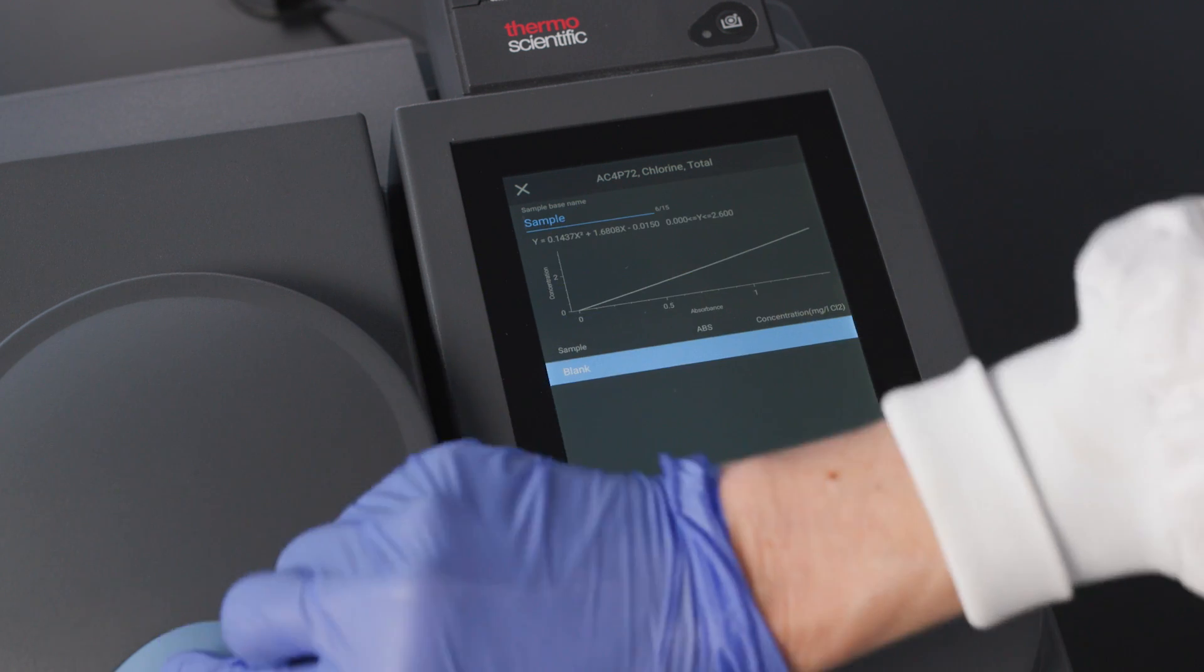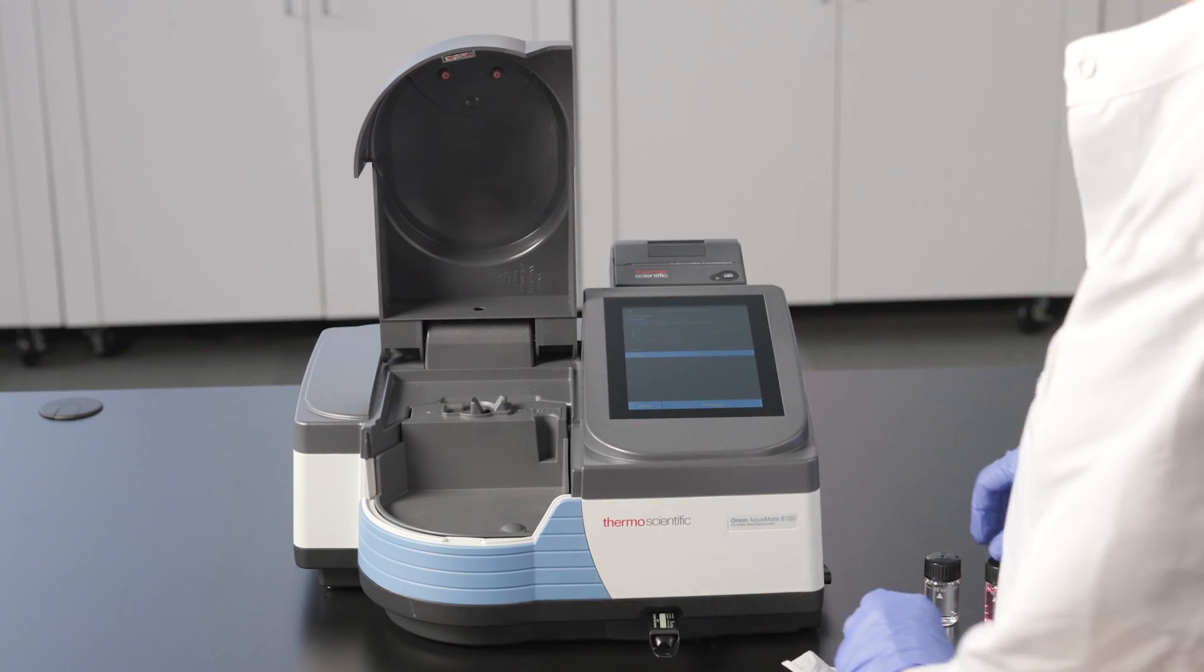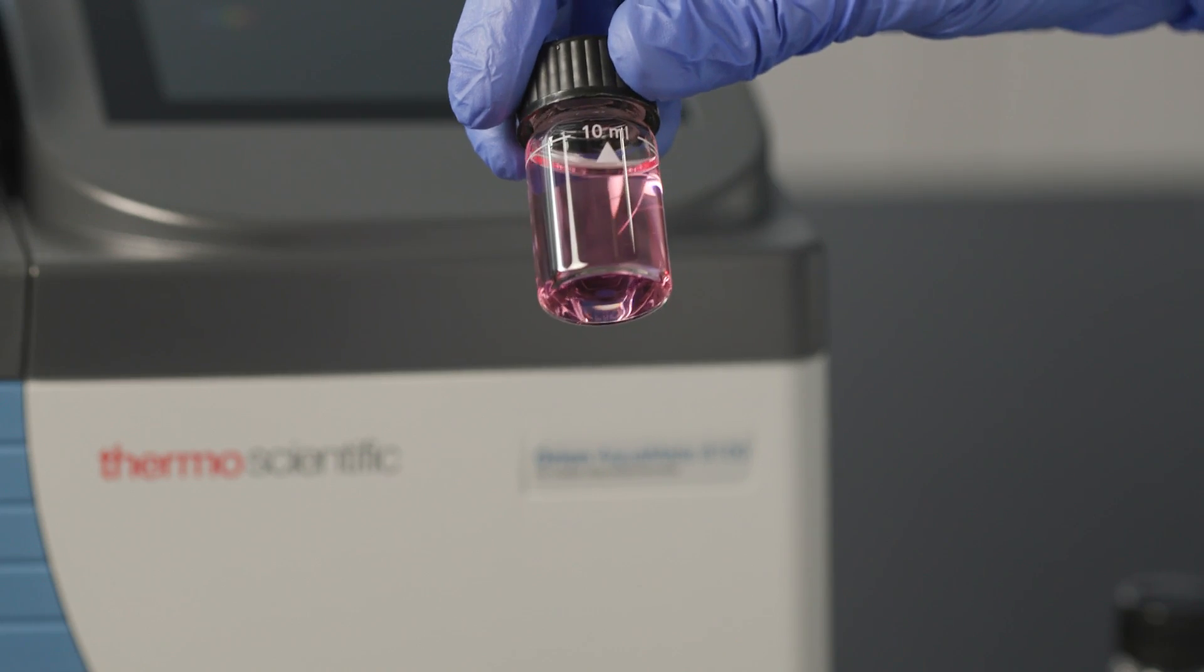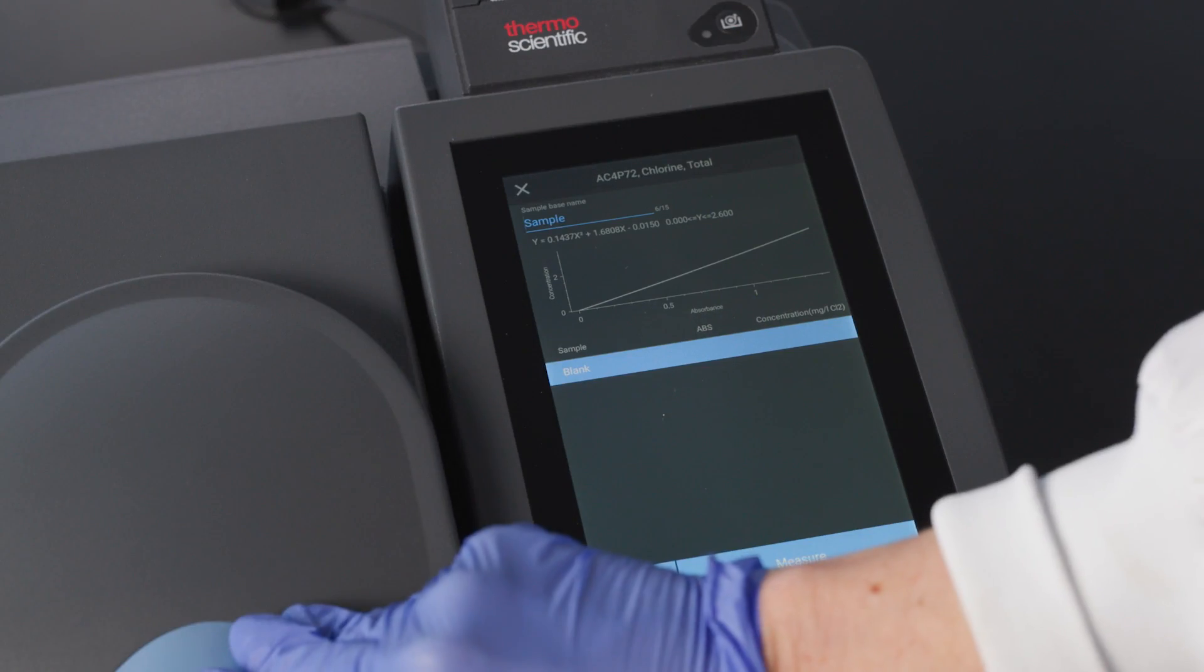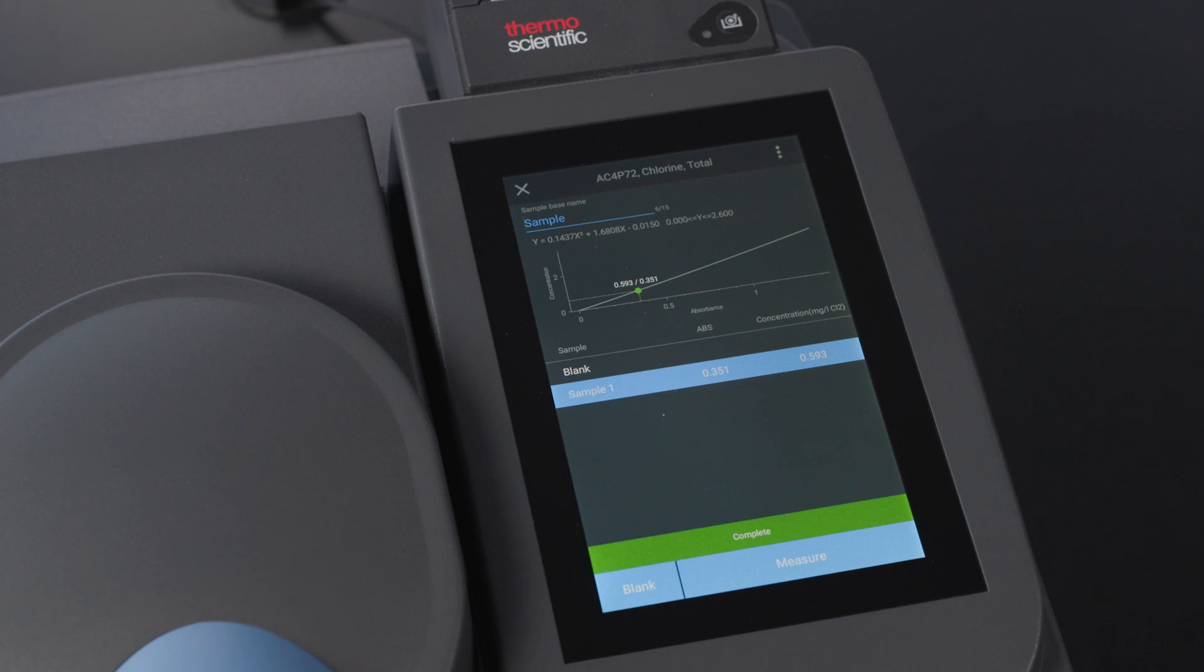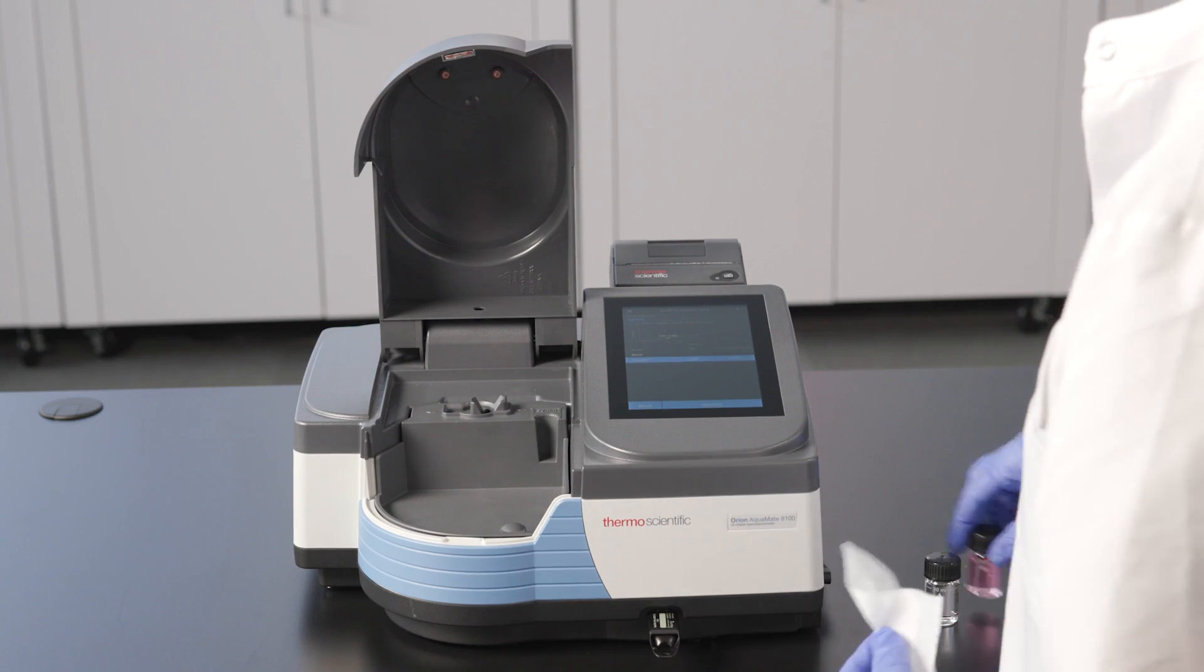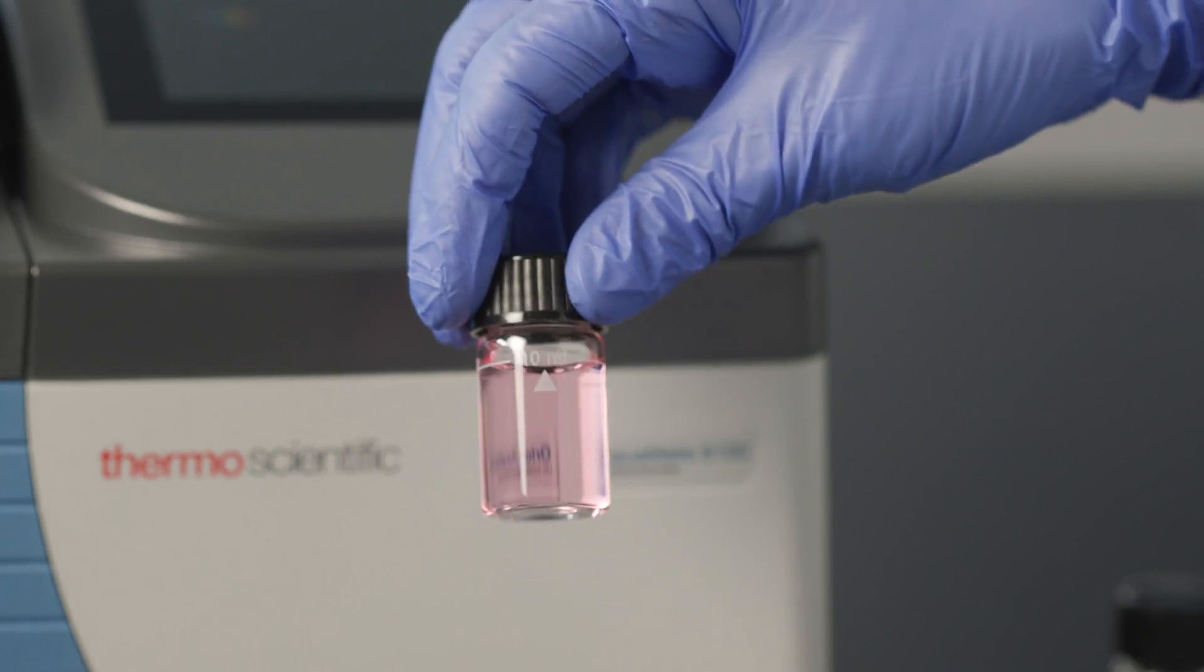Now we can move to the measurements. We take out the blank and insert our first sample. We can enter the sample number here if we want, or the meter will assign sequential sample numbers. Then we simply select measure, and the Aquamate spectrophotometer will tell us how much chlorine is in the sample. Then we can repeat the process for other samples by simply changing the sample in the holder and pressing measure again.